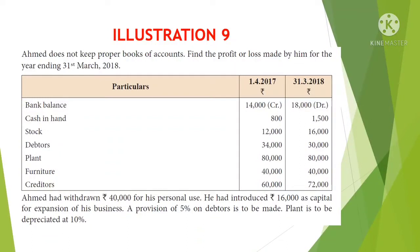Bank balance: 14,000 and 18,000. Cash in hand: 800 and 1,500. Stock: 12,000 and 16,000. Debtors: 34,000 and 30,000. Plant: 80,000 and 80,000. Furniture: 40,000 and 40,000. Creditors: 60,000 and 72,000.